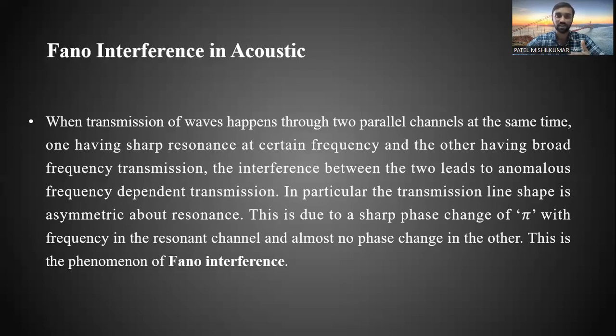That curve will look like a resonant, normal resonant curve, and that's why it is called narrow or sharp resonance channel. There is another channel called broad transmission channel. In this channel we get very good transmission of sound for almost all the frequencies. So when interference happens between these two sound carrying channels, we get an asymmetric resonant curve, and that phenomenon is Fano interference in acoustic.